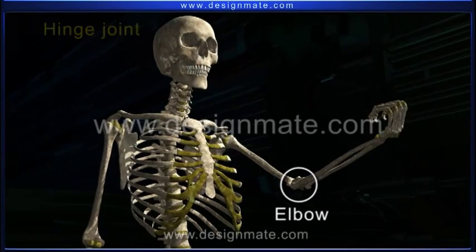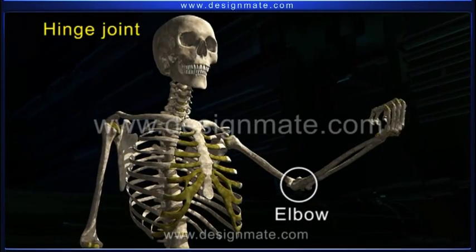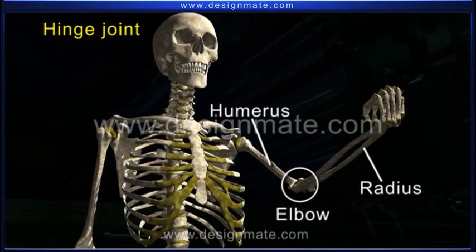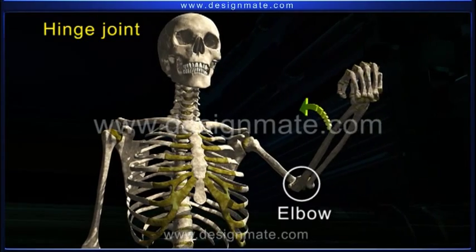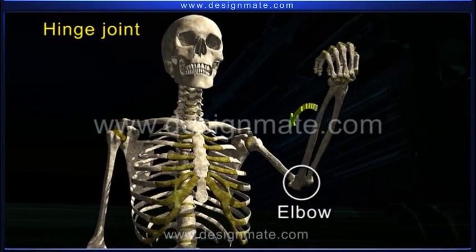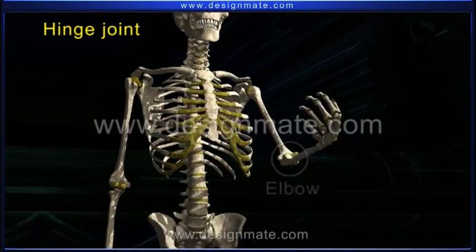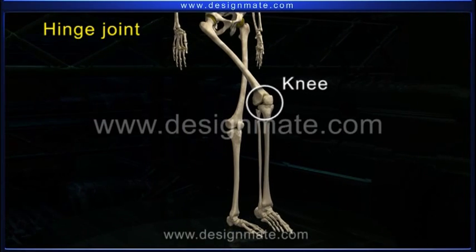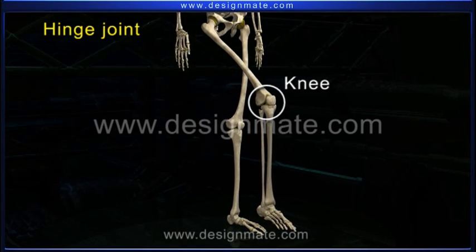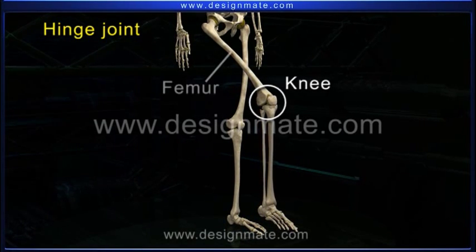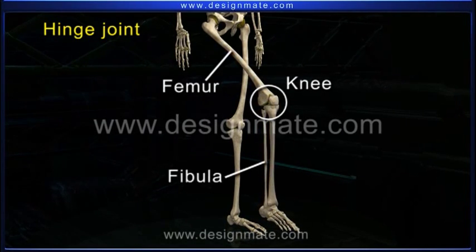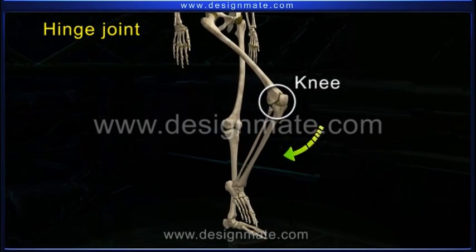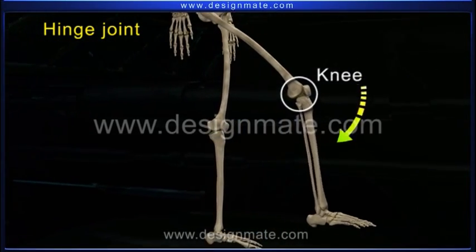The elbow is an example of a hinge joint. This joint between the humerus and the radius and ulna allows movement in only one direction. The knee joint is also a hinge joint and is formed by the articulation of the femur, fibula, and tibia. This joint helps in moving the leg in one direction only.